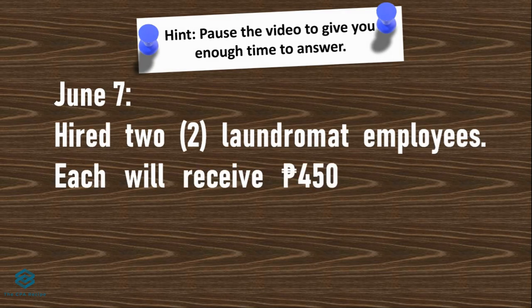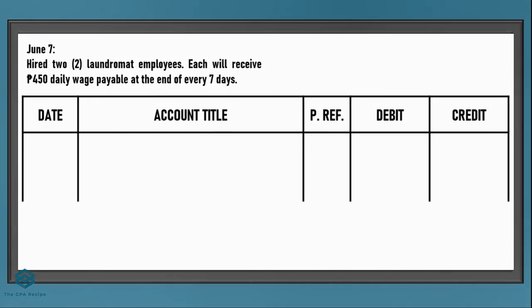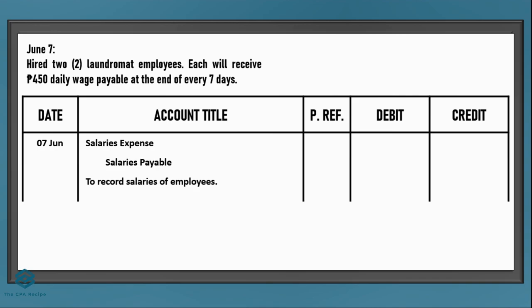On June 7, we hired two laundromat employees. Each will receive 450 pesos daily wage, payable at the end of every seven days. So how do we record this? Let's put the date first. You might think to debit salary expense and credit salaries payable, since payment is at the end of seven days. The amount would be 450 pesos per day for 7 days times 2 employees, for a total of 6,300 pesos.